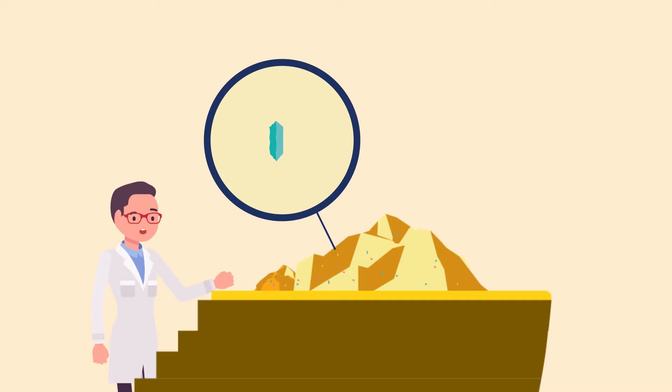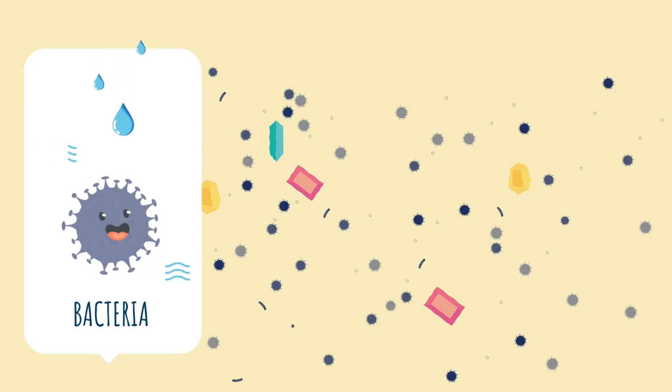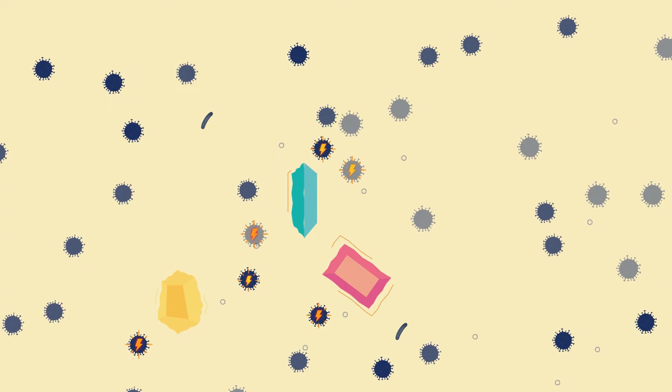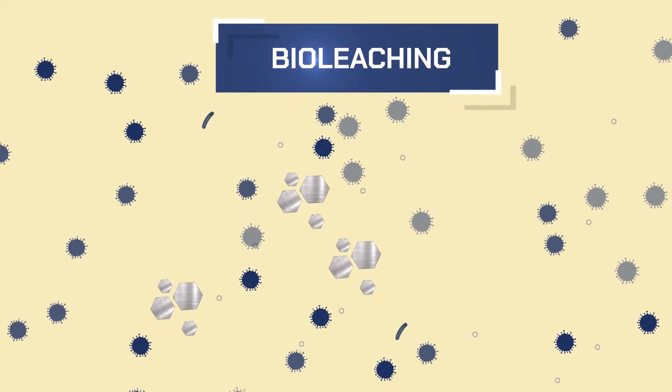Mineral processing waste contains minerals, but also living bacteria. We bacteria can thrive in these piles of waste. All we need is access to air and water to multiply. But we also need energy, which we can collect by dissolving and transforming metals. This is bioleaching.